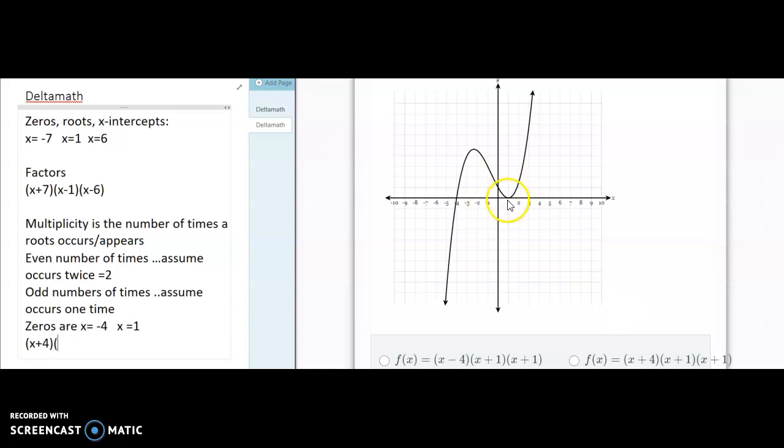However, look at the 1. When it comes to 1, it barely touches it and it goes up. Notice that, how it comes down at 1 and it barely touches it. That means that our multiplicity is even.